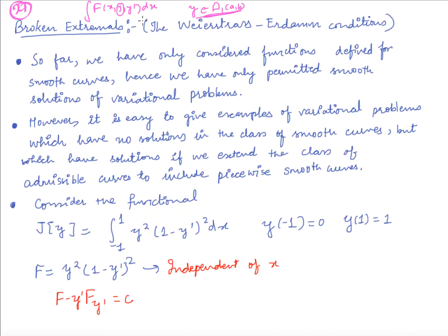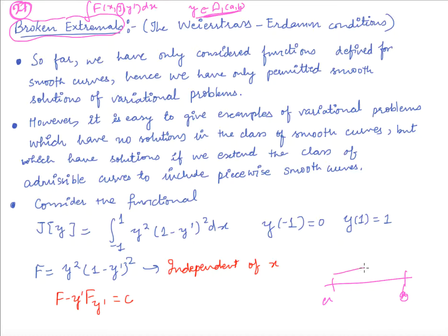In the last 26 videos, we had this restriction that the function should be smooth. Now we would like to know whether we really need the cases where the functions may not be smooth. This leads to what are called broken extremals — extremals of the form of piecewise continuous or piecewise smooth functions over a domain a to b.